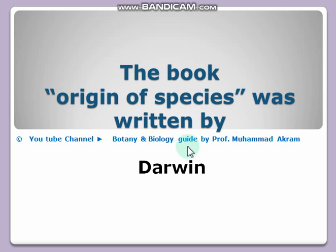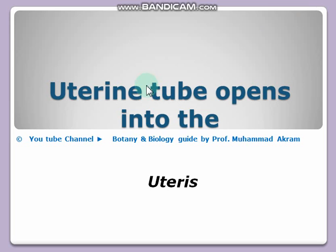The book 'Origin of Species' was written by Darwin. The uterine tube opens into the uterus.